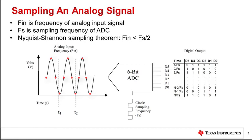The Nyquist criteria of f in less than fs over 2 is met and we should be able to extract all the information contained in analog signal. Sampling a signal higher than Nyquist frequency is called oversampling.